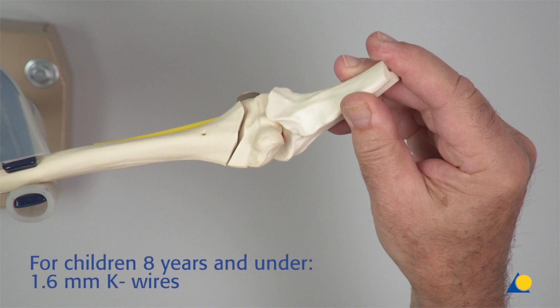For children 8 years of age and under, it is recommended to use 1.6 mm K-Wires. For older children, 2.0 mm K-Wires are recommended, which provide higher stability.